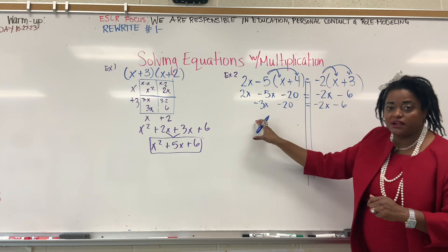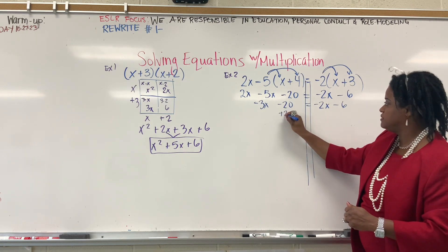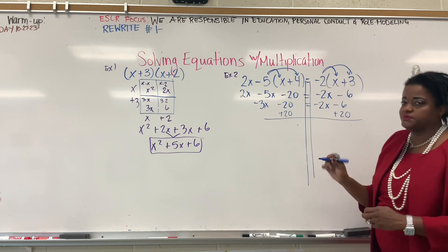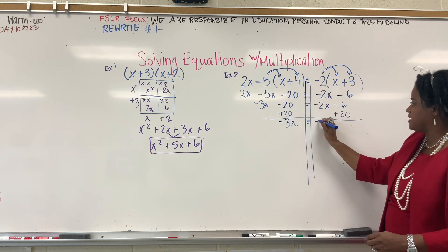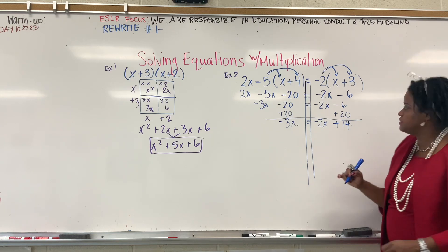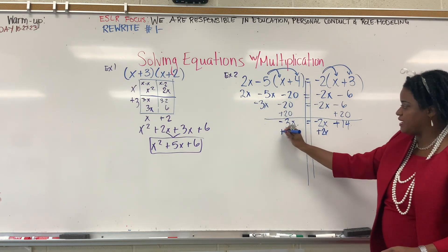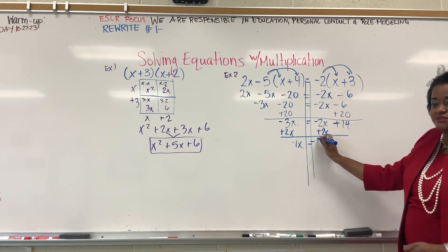Now, I'll bring the x over there, the number over here, and actually, let's add the 20. And we have negative 3x equals negative 2x plus 14. And I'm scared. I hope we don't have a fraction. Now, add 2x, and we have negative 1x equals 14.